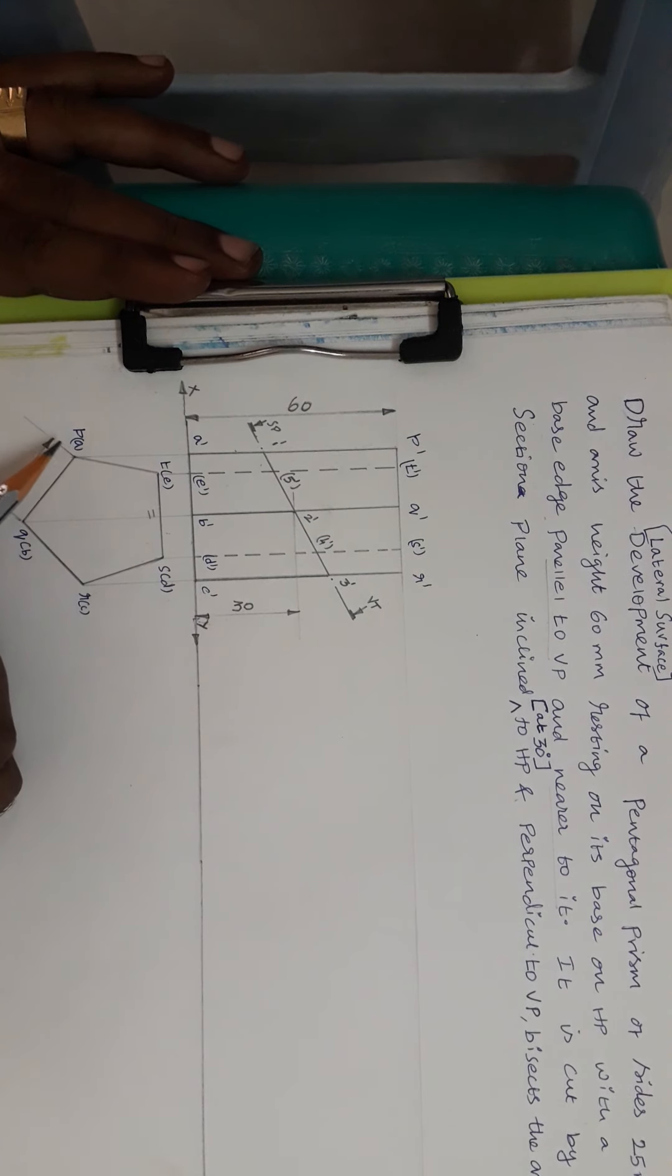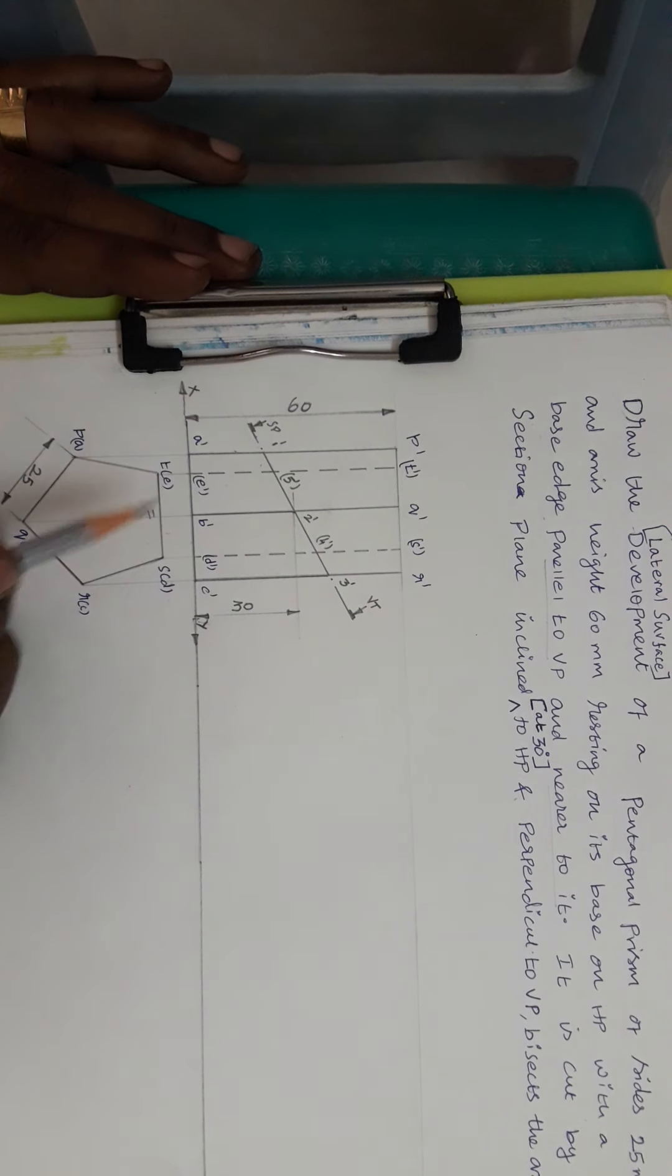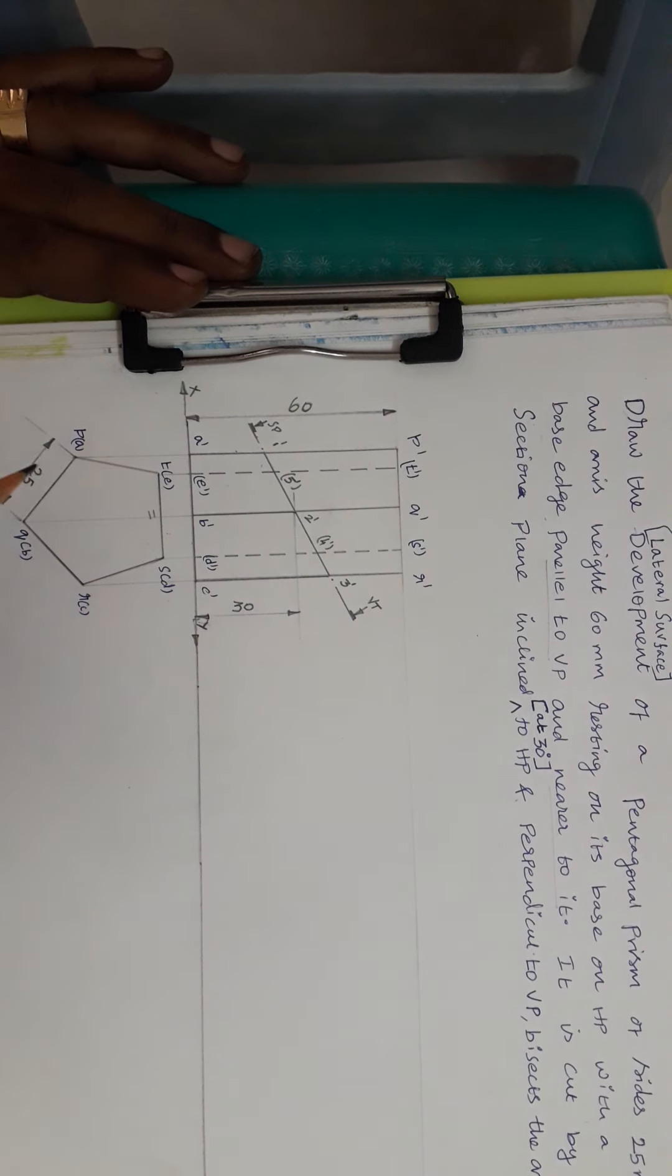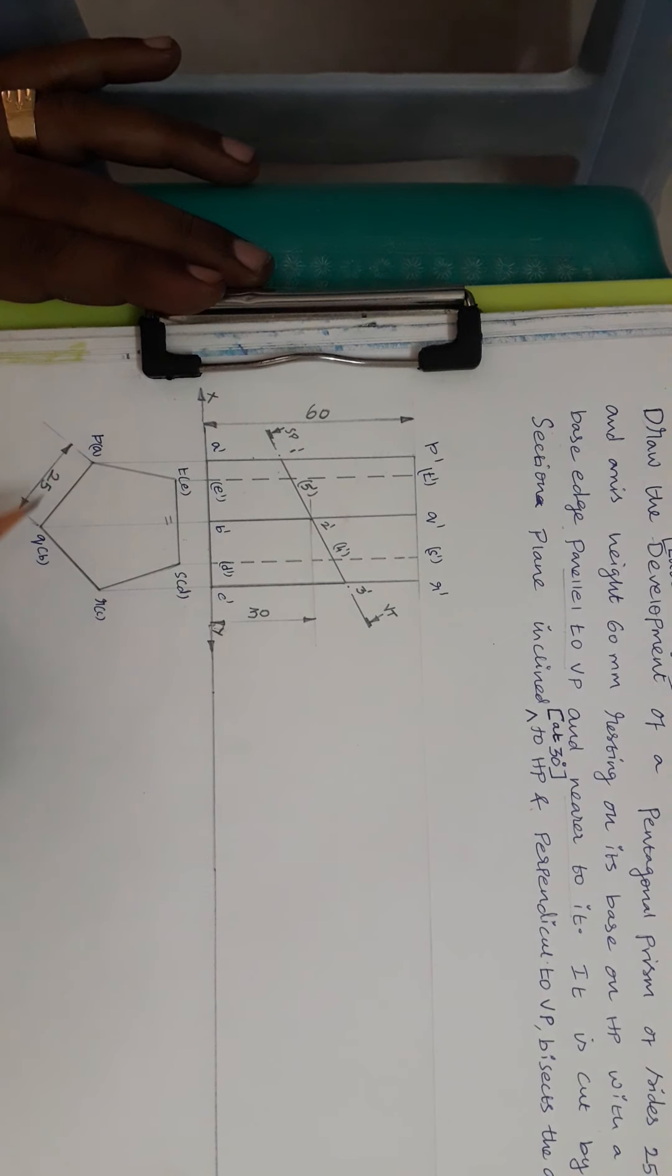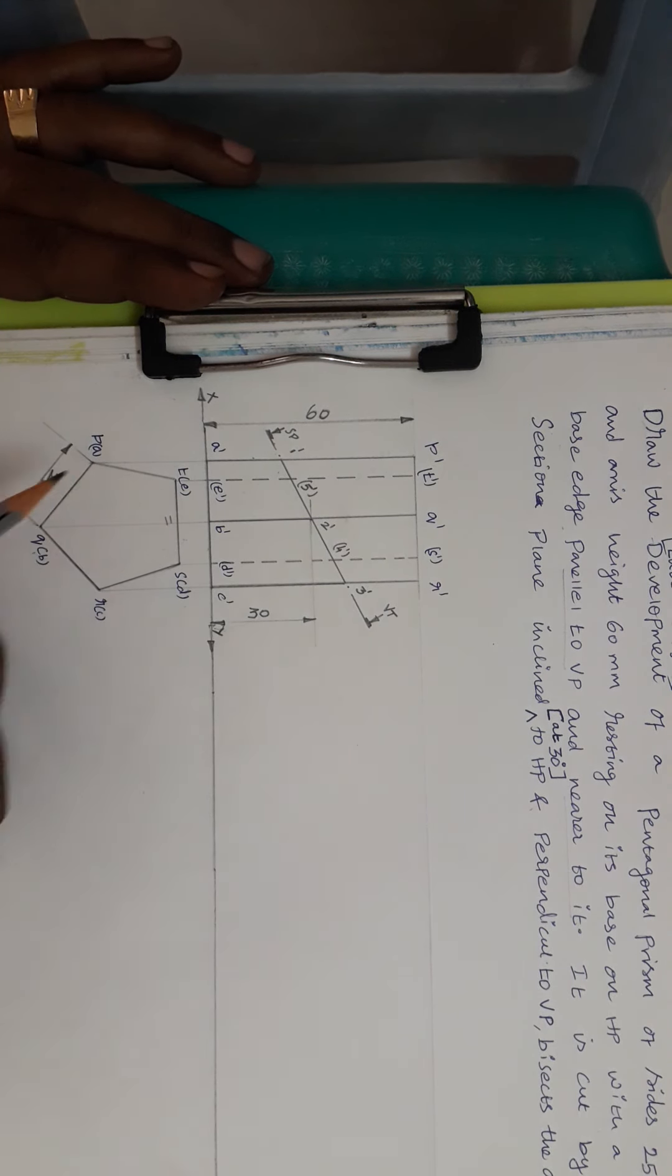I am giving the names PQRST for the top base and ABCDE for the bottom base. When we see from the top side PQRST is visible and ABCDE is hidden. So PQRST is given outside brackets, ABCDE is given inside brackets.